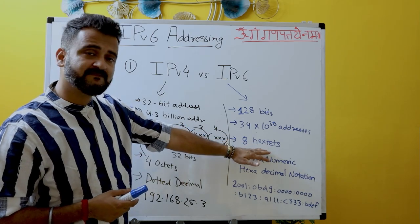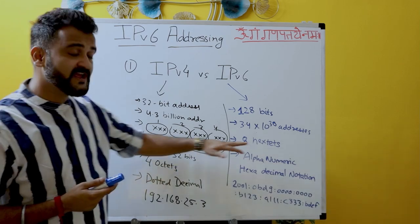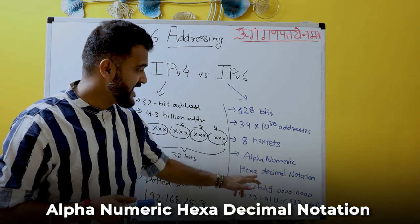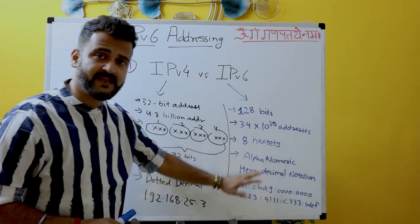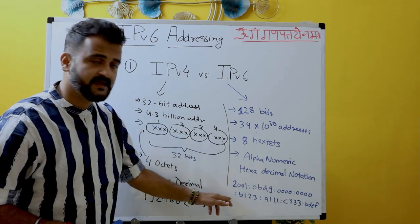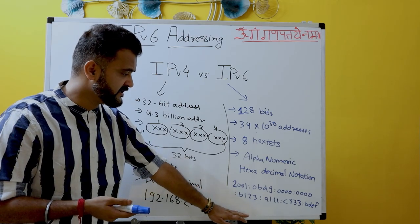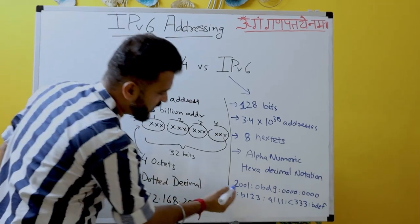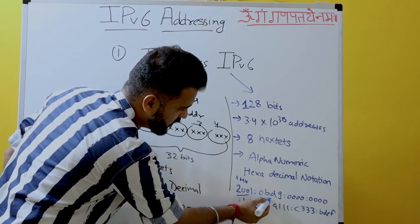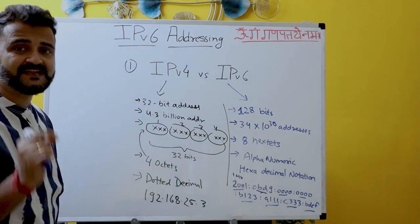Within IPv6, we have the concept of hex stats. In IPv4 we have 4 octets; in IPv6 we have 8 hex stats. The notation used is alphanumeric hexadecimal. You would see something like one hex stat, for example '2001'. Counting through the full IPv6 address, there are 8 hex stats in total.